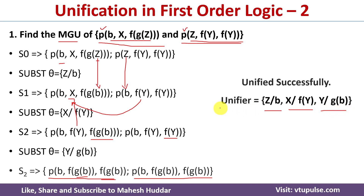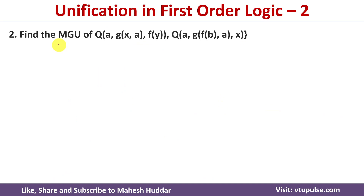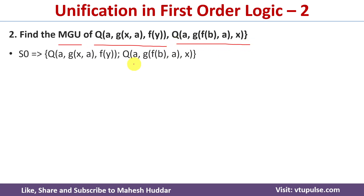Now I will take a second example. Again we need to find the most general unifier for two expressions. The predicate symbol is q in both cases and the number of arguments is 3 in both cases. Looking at the first argument, we have a in both expressions, so no substitution is needed there.